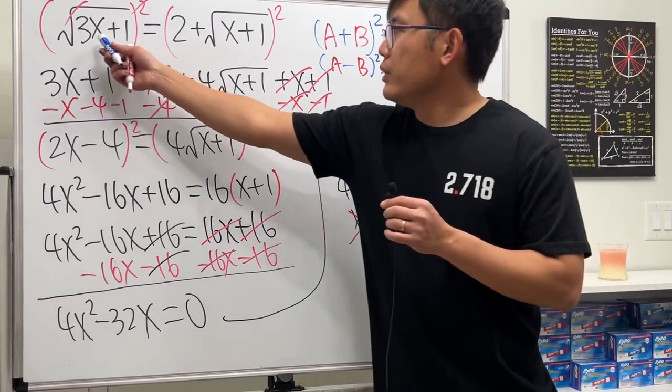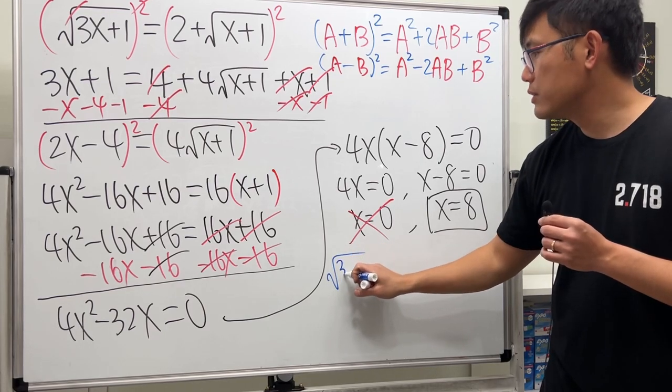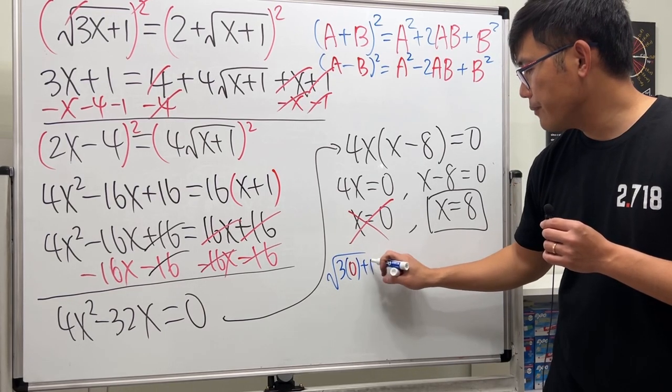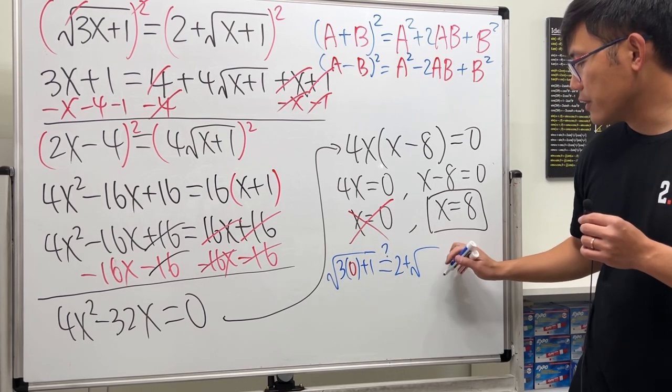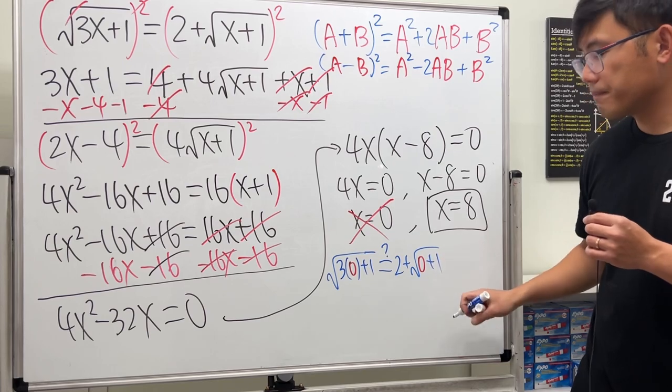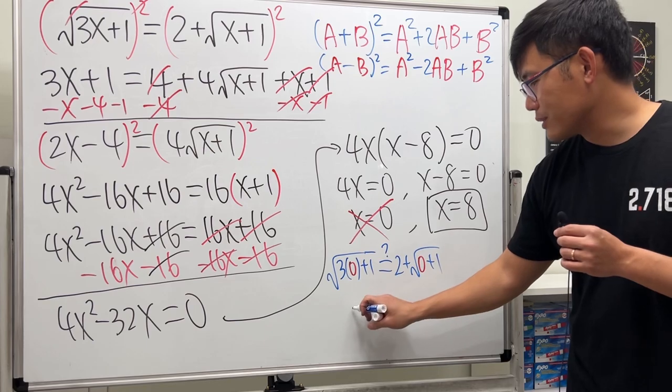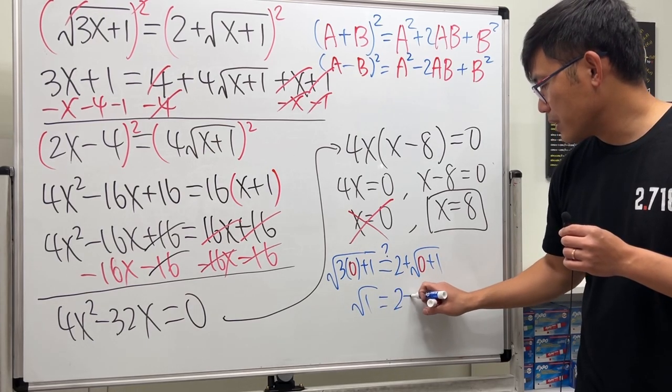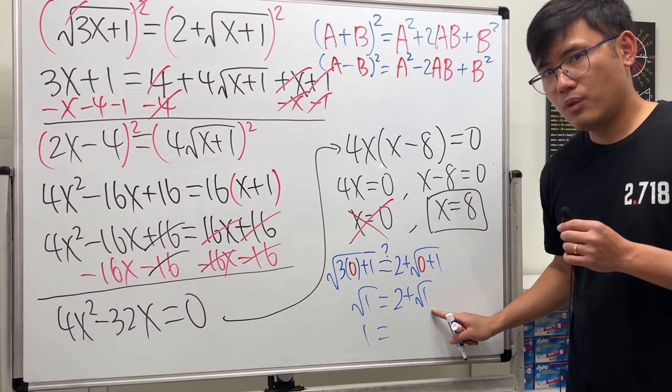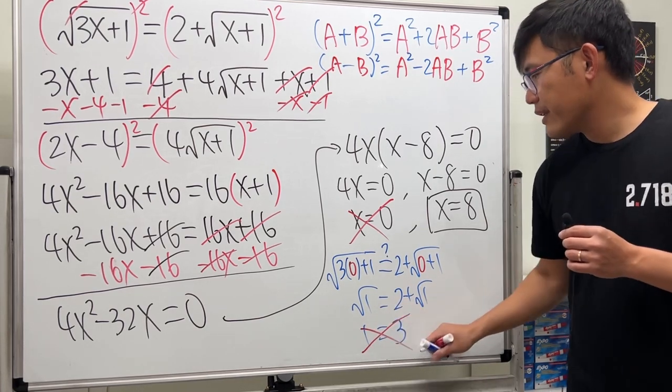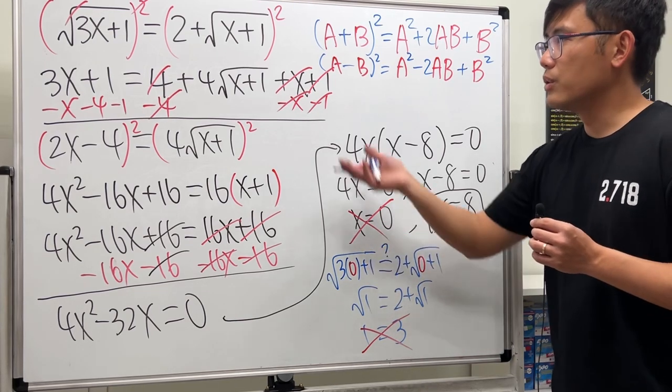If we put this 0 into this x and x, original expression, we get square root of 3 times 0 plus 1. We have to check if this is indeed equal to 2 plus square root of 0 plus 1. On the left-hand side, 3 times 0 is just 0 plus 1, so it's square root of 1. On the right-hand side, this is 2 plus, this is square root of 1. But this is 1. This is 1. 1 plus 2 is 3. No. That's why this is a false answer. This is the so-called extraneous solution to our equation.